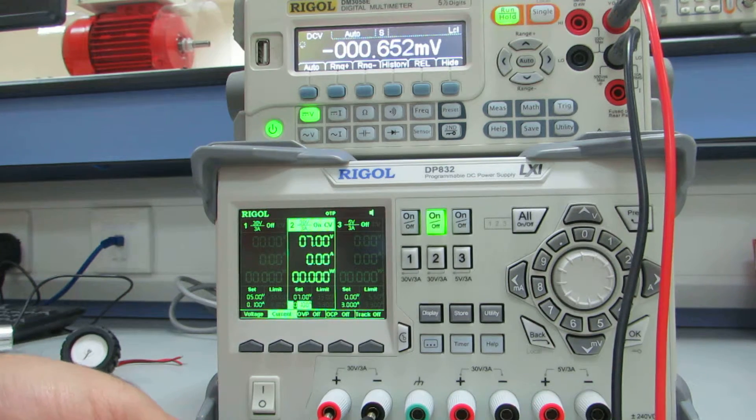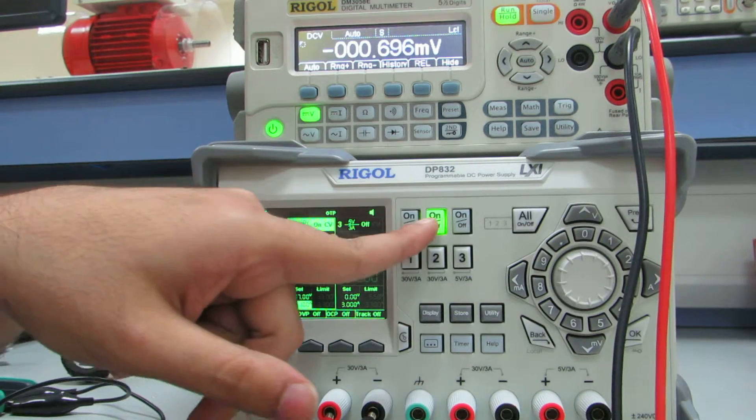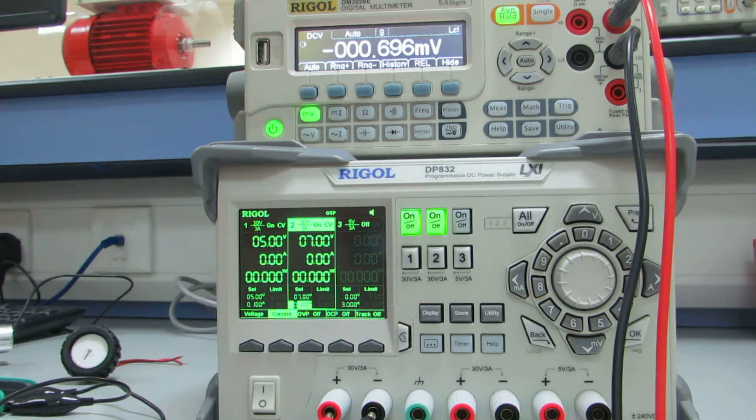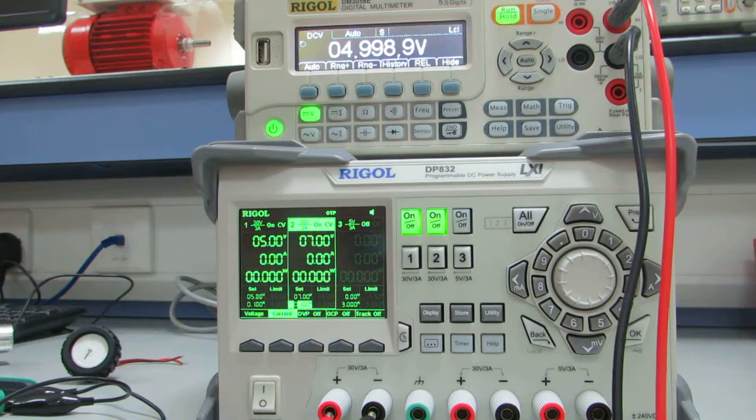Because since the channel is disabled there is no output from this channel. So if I turn it back on, I will get my 5 volts. Of course 4.99 is 5 volts.